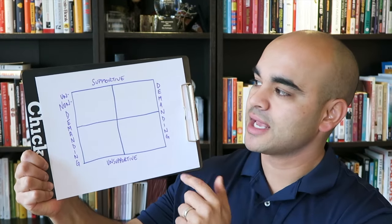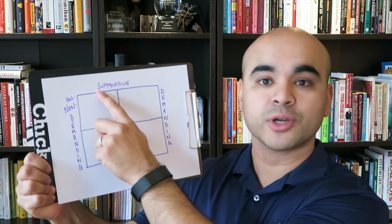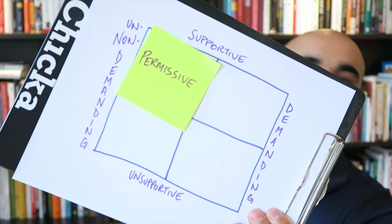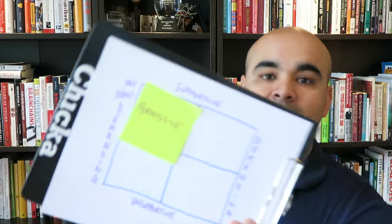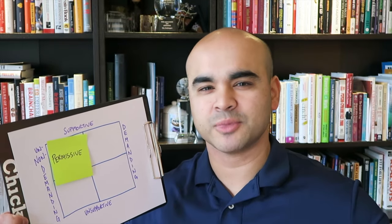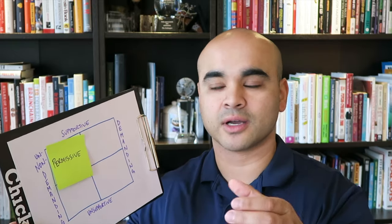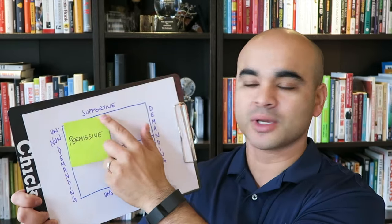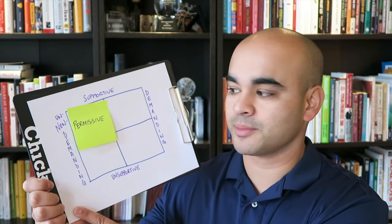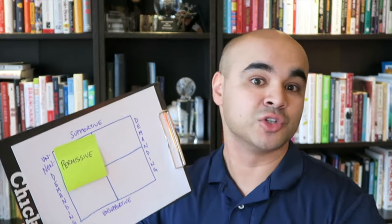Angela Duckworth says that if you are a supportive leader yet you are not demanding, you are a permissive parent or leader or influencer. You will serve up a whole lot of self-esteem with self-esteem on the side and maybe an extra large self-esteem cup, because you are completely supportive of this person yet demand nothing in terms of performance from them.